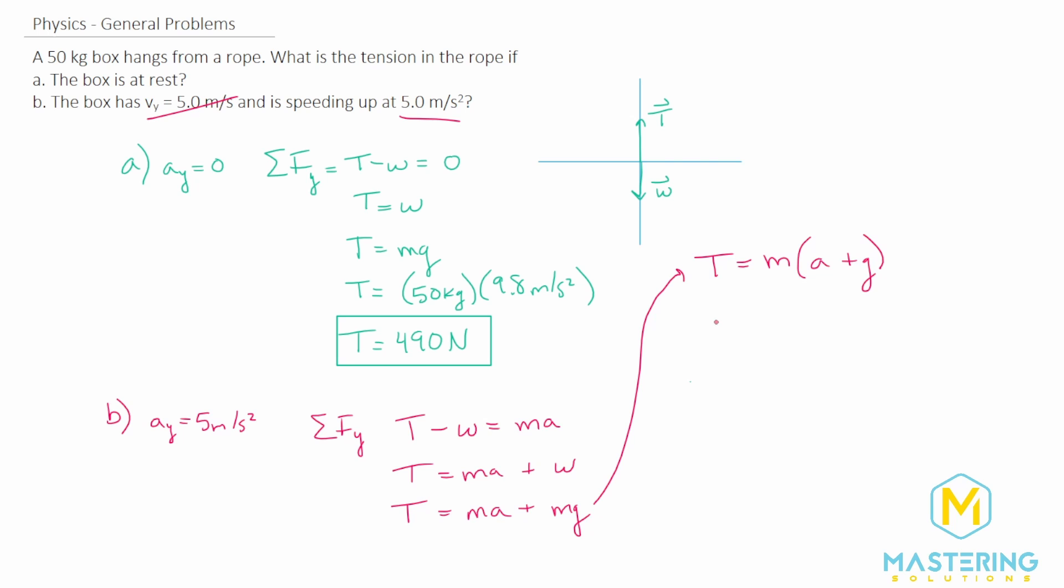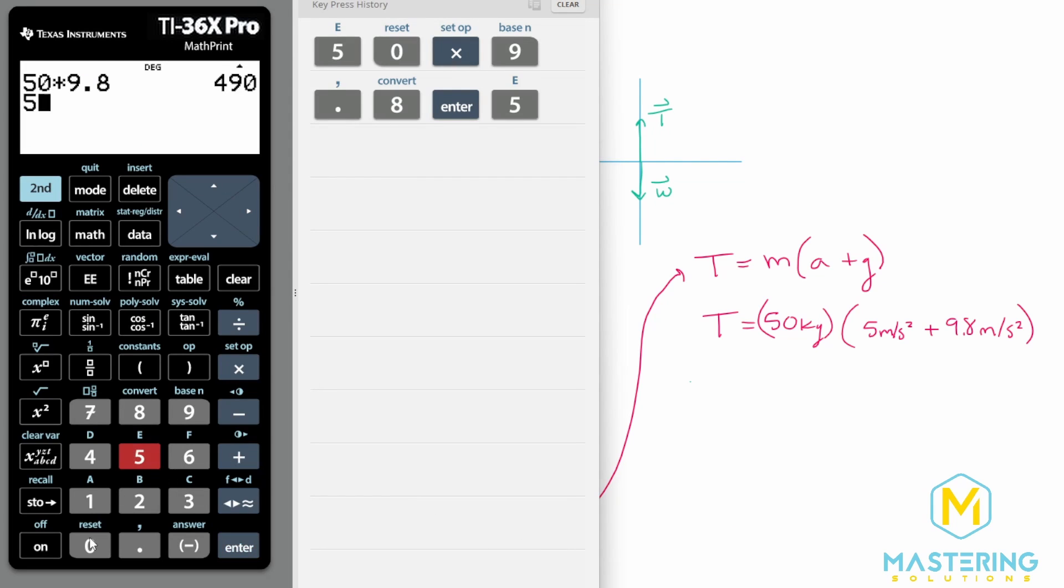So T is equal to the mass times the acceleration plus the gravity. As I said, this is optional. It'll give you the exact same answer either way. So we have 50 kilograms is the mass, and then the acceleration we said is 5 meters per second squared, plus gravity, which is 9.8 meters per second squared.